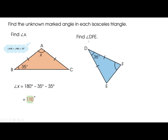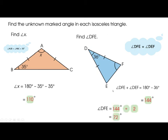Similarly, we have angle DFE. This angle is 36 degrees and another angle is unknown. Since it is isosceles, DEF is also equal to 36 degrees. So 180 minus 36 equals 144 degrees remaining for the two equal angles. Divide by 2 and the answer is 72 degrees.